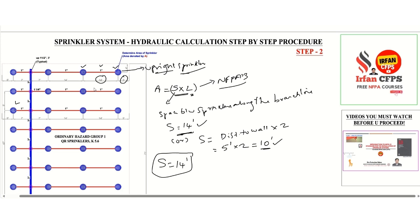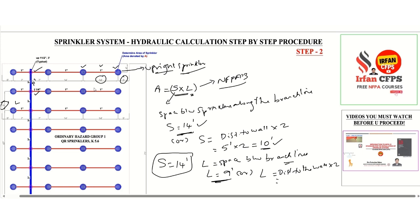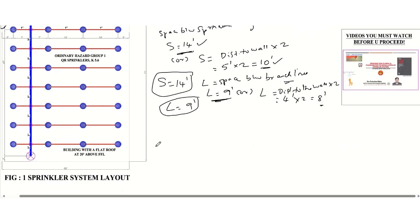L is the spacing between branch lines. Here we have one branch line and another, and the space between them is 9 feet, so L could be 9 feet. Alternatively, L equals distance to the wall times two: the distance to the wall for this sprinkler is 4 feet, so 4 times 2 gives 8 feet. The largest of these two is 9 feet, so L equals 9 feet.